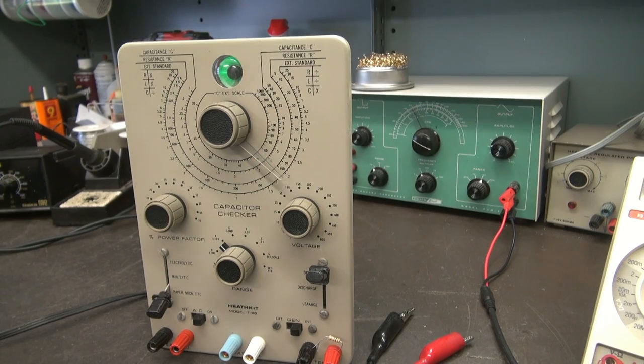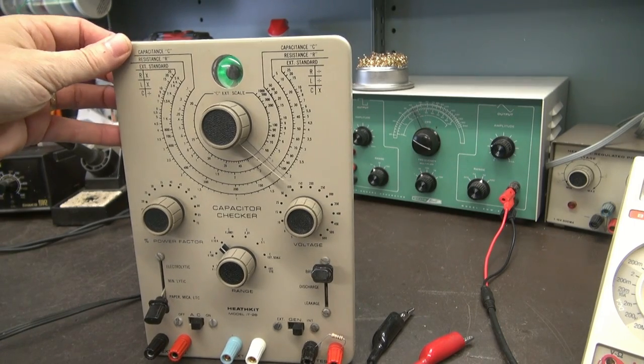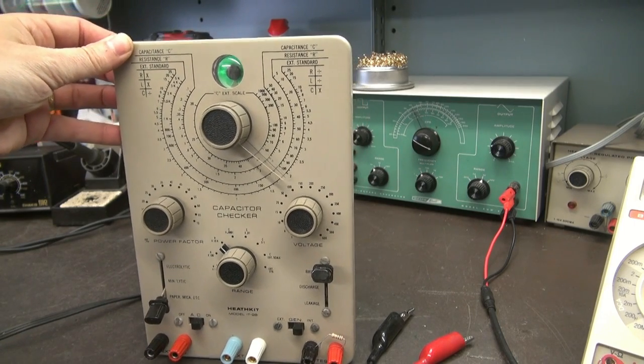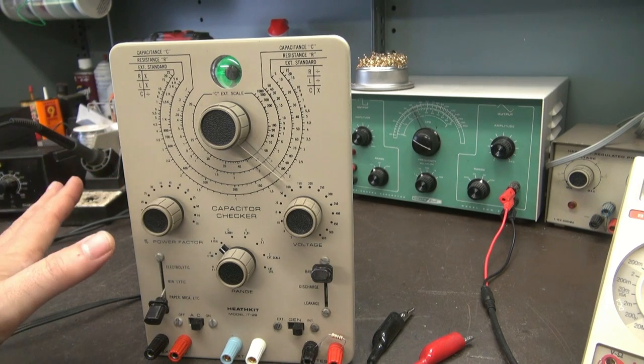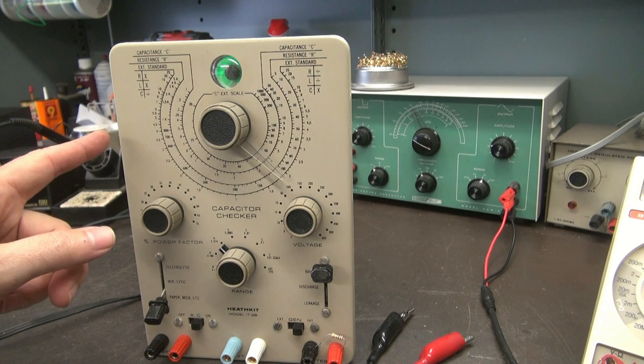Here she is, the Heathkit IT-28 capacitor checker, as they call it. Actually it's a bridge. It can measure resistance and capacitance, and you can hook up external coils and do some turns ratio measurements.